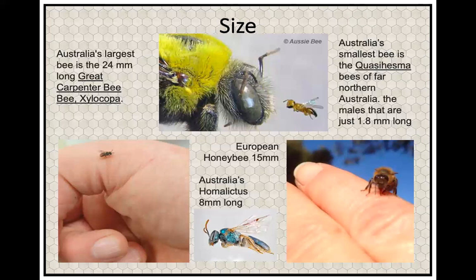Looking at a European honeybee, if you put your thumb out and look across your thumbnail, that's about the length of a worker bee. The queen and drones are a bit bigger. The homoelictus bee is just less than one centimetre long and comes in shiny metallic blues, greens, and blacks. I actually found one in a commercial kitchen while extracting honey — it had come in on one of the boxes, attracted to the smell of honey.